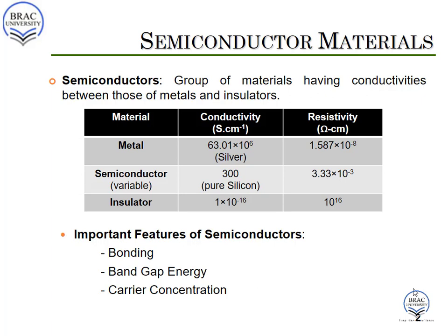Semi means something in between, so a semiconductor is a material which has properties somewhere in between an insulator and a conductor. In terms of conductivity, semiconductors are those materials which allow electrons or current to pass through them under certain conditions.